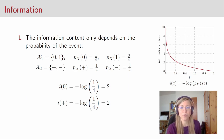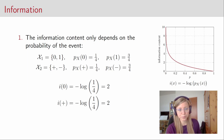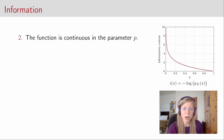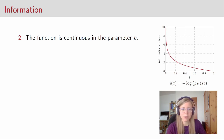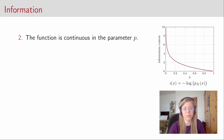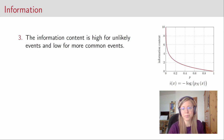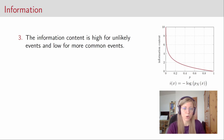So the information content of the realization 0 is 2, and the information content of the realization plus, which has the same probability as 0, is also 2. The second property is that the function is continuous in the parameter p. This makes sense intuitively because if the probability of some event only slightly differs from another event, then also the information content of this event should only slightly differ from the information content of the other event. The third property is that the information content is high for unlikely events and low for events that are more common — something you can see directly from the graph.